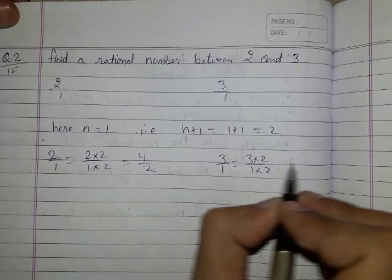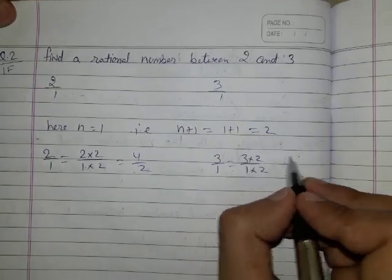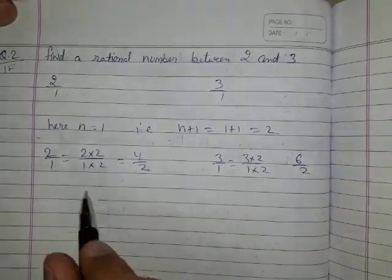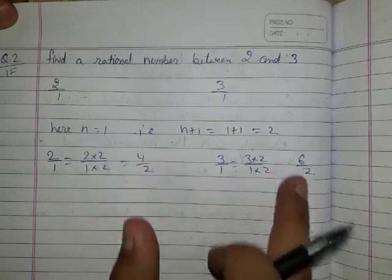So 2 to the 4 upon 2 and it will become 6 upon 2. Now you have to find one rational number between 4 upon 2 and 6 upon 2.